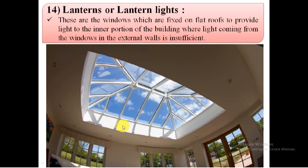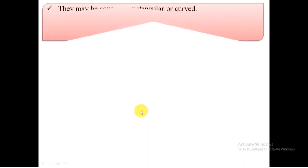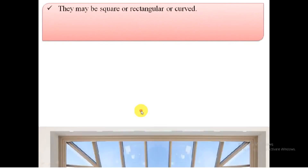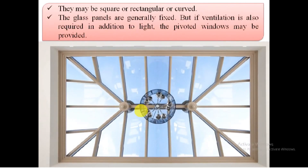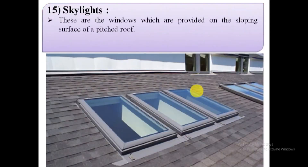14. Lantern windows. They are used on flat roofs to provide more light and air to the inner apartments of the building. They may have several shapes. They admit light either through vertical faces as well as inclined faces. The roof slab has an appropriate opening below the window.